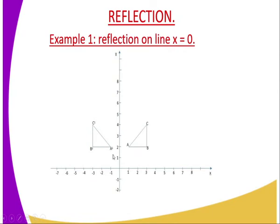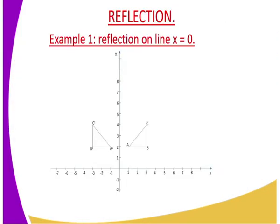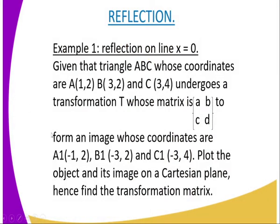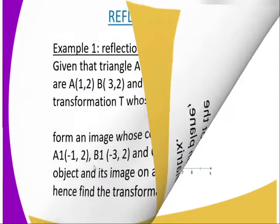You are also supposed to plot the coordinates of the image. The image coordinate A1 is negative 1, 2, as you can see on the question. The image coordinate B1 is negative 3, 2 — you can confirm that is negative 3 and 2. And the image of C1 is at negative 3 and 4.